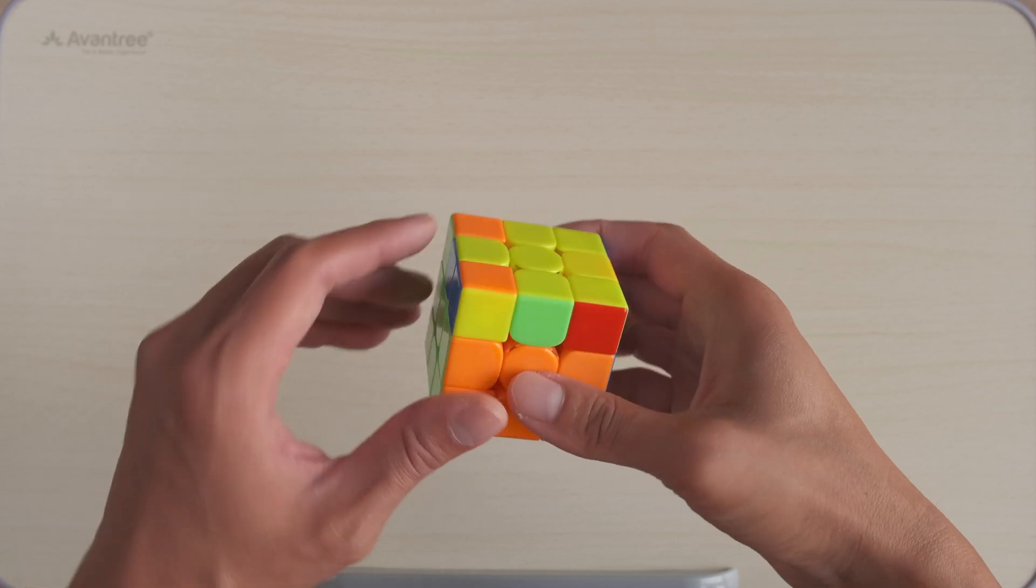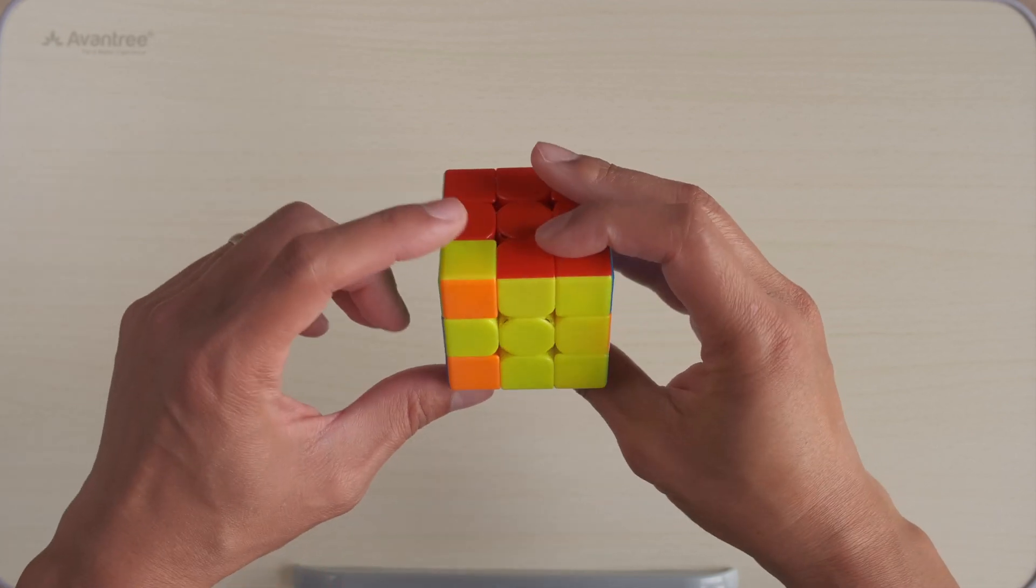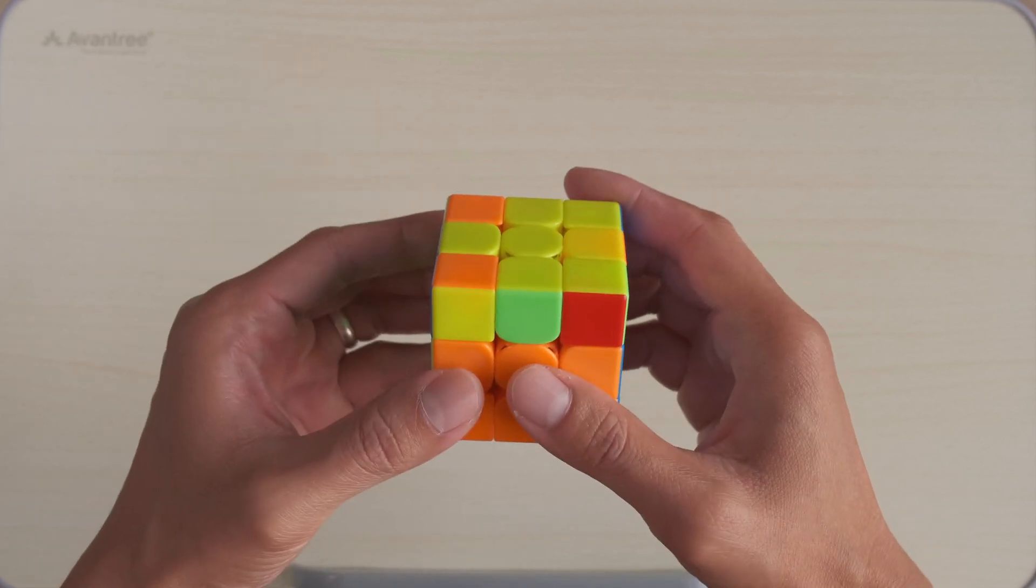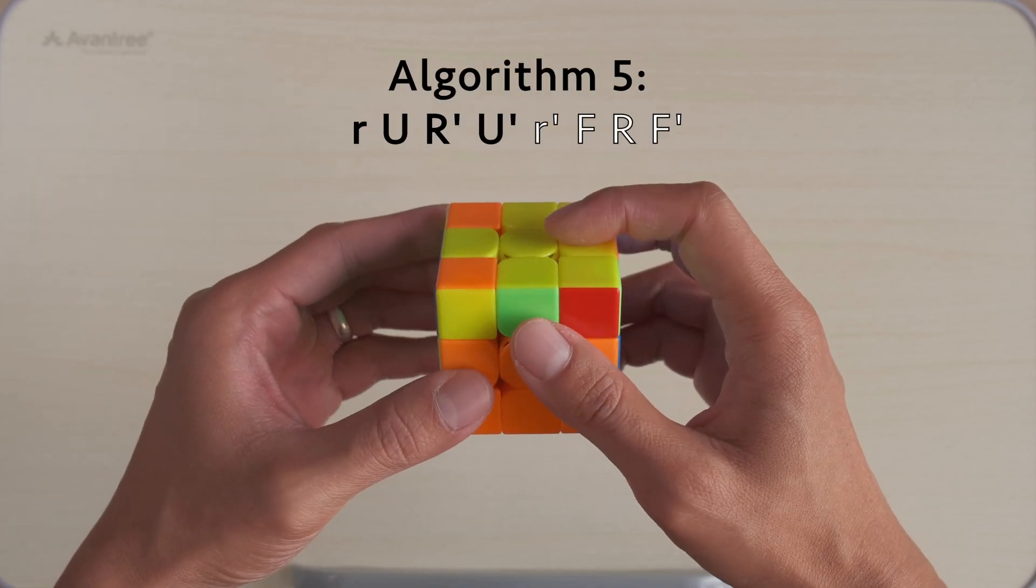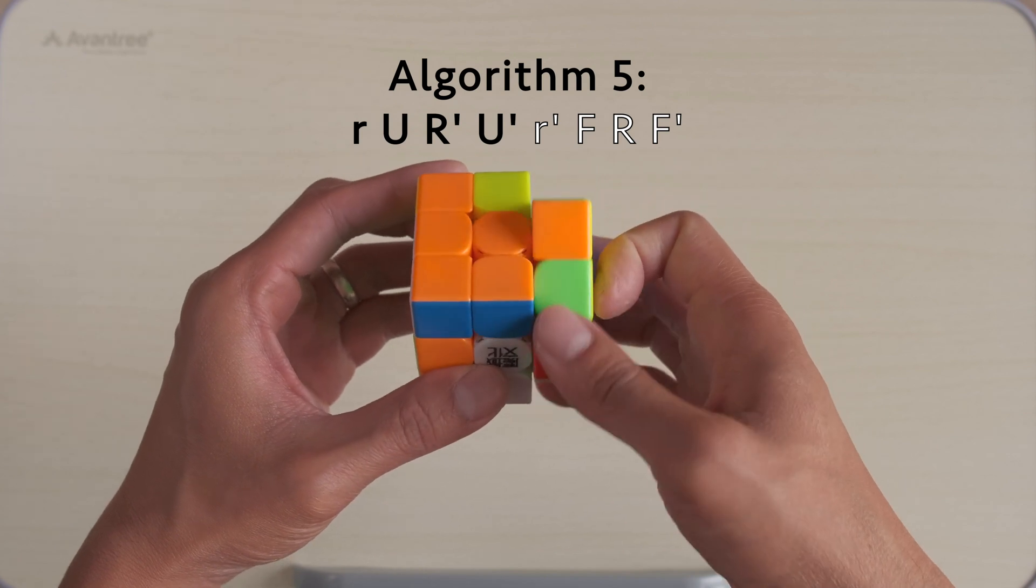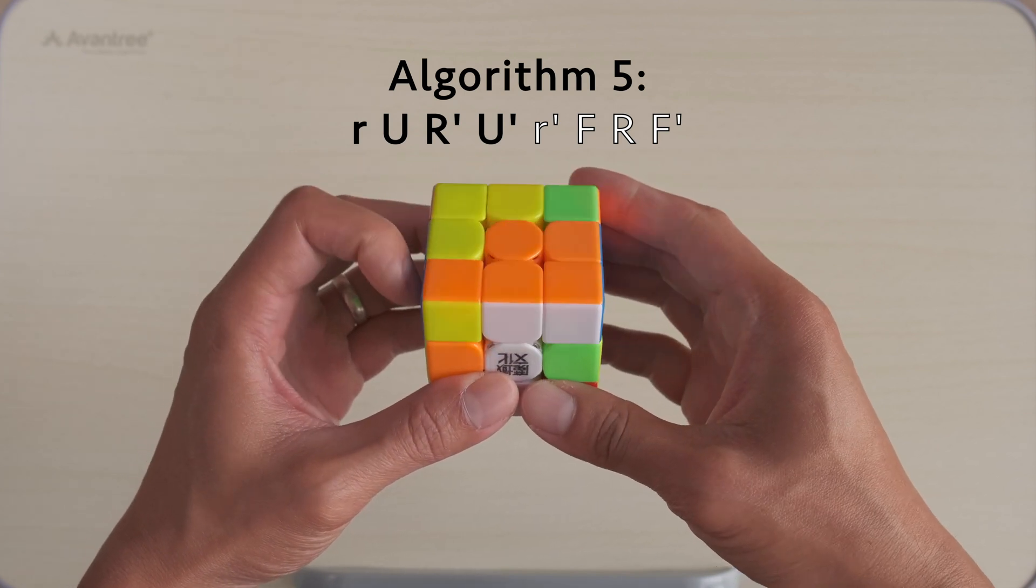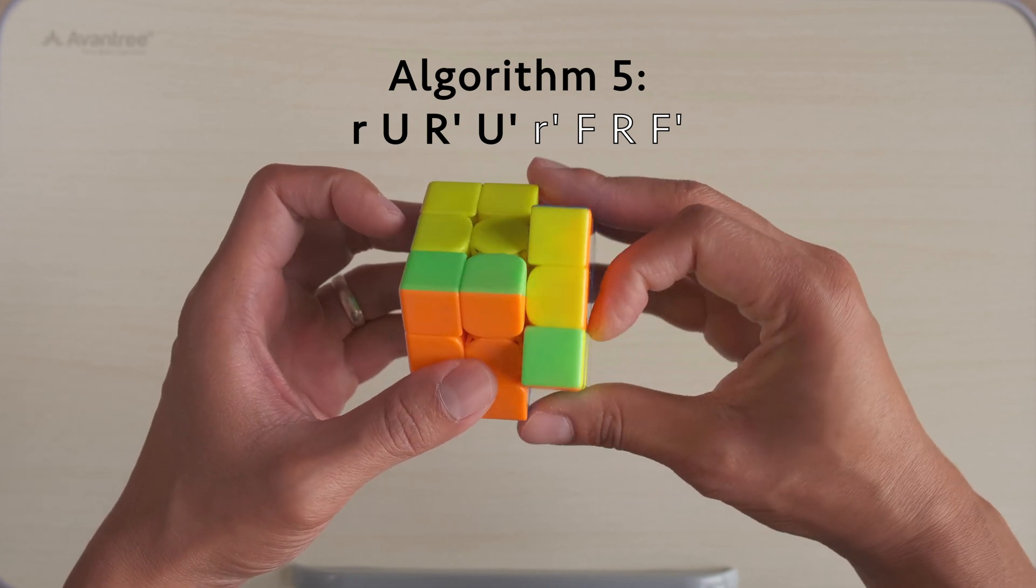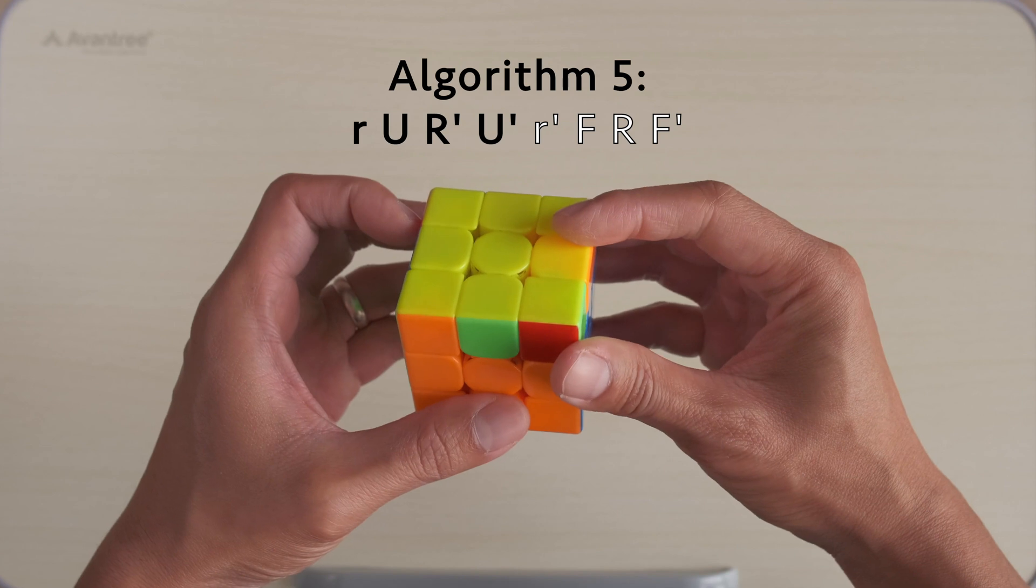For the fifth pattern, we have a cross and two corner pieces facing out. To do the algorithm, we hold it like this: small r, U2, R', U', R, U, small r', F, R, F'.